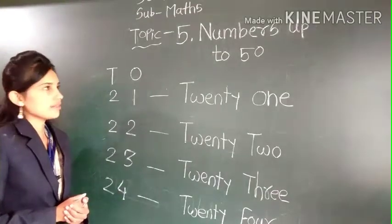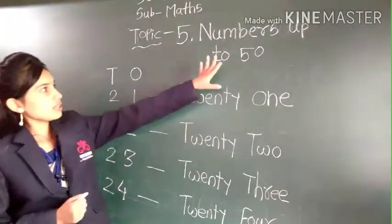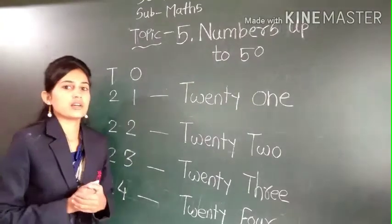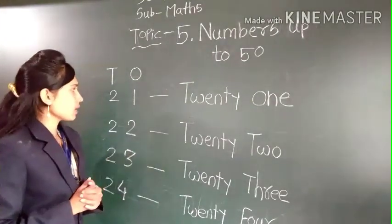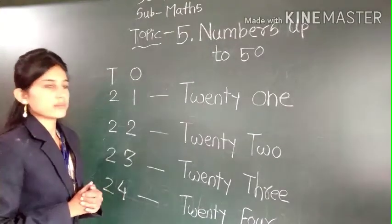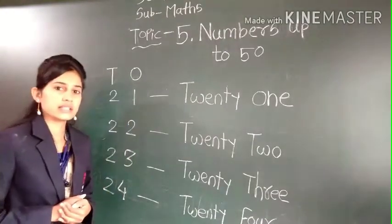Good morning students. Today we are going to start a fifth lesson: Numbers up to 50. We have already learned numbers up to 20. Today we are going to start numbers and number names from 21 to 30.